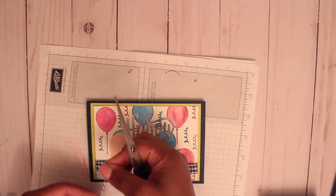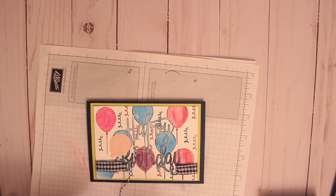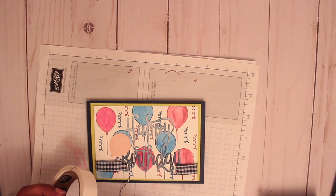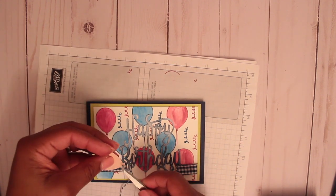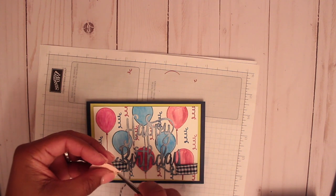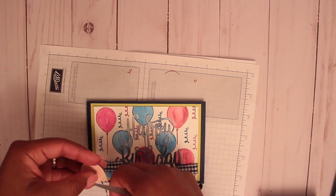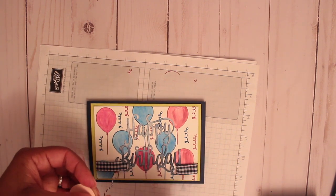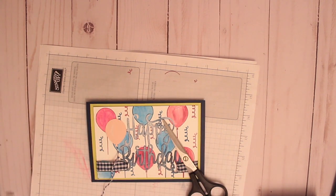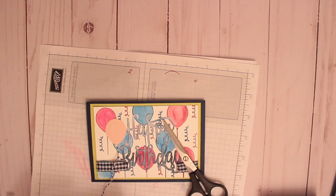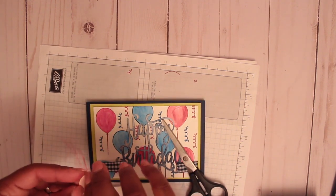I have a piece of twine. This is not Stampin' Up twine. This is white and navy just from my stash. Use whatever you have in your stash. You're not breaking your wallet. I'm using a little glue dot here. I'll put my little twine there to the back. I'm going to add some dimensional to the back of this balloon.